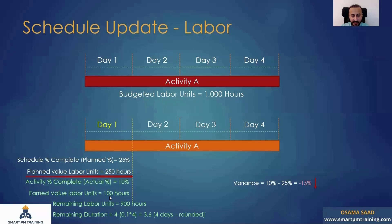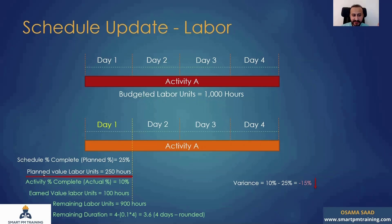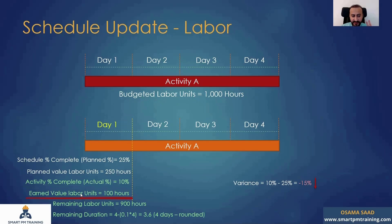The earned value labor units are 100 hours. This is not actual — it's virtual. There are three different labor unit factors. The first is planned value labor units: 25% times 1,000 hours equals 250 hours. The second is earned value labor units: 10% times 1,000 hours equals 100 hours. The third factor is the actual hours spent on site.